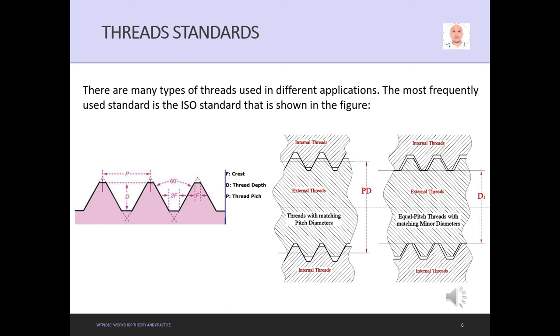Thread standards: There are many types of threads used in different applications. The most frequently used is the ISO standard shown in the figure. Here on the left side we have the nomenclature of the thread: the crest, the thread depth, and the pitch. On the right side we can see the internal threads and external threads with matching pitch diameter and minor diameter.